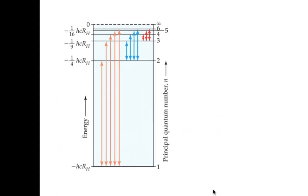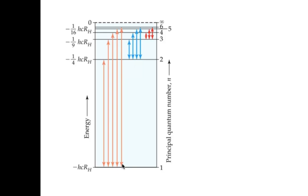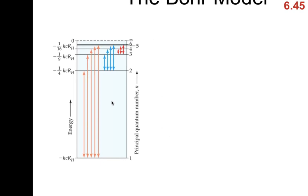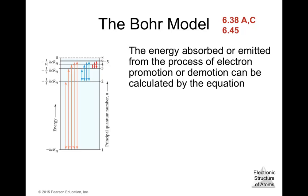In the Bohr model diagram, we can see all the different emissions — movement of electrons from orbit 1 to 2, 2 to 3, 2 to 4, and so on. The energy absorbed or emitted from electron promotion or demotion can be calculated by: ΔE = −hcR_H × (1/n_f² − 1/n_i²), where n_f is the final orbit and n_i is the initial orbit.